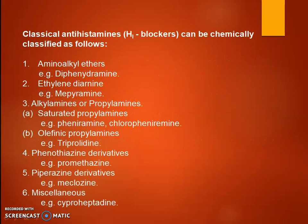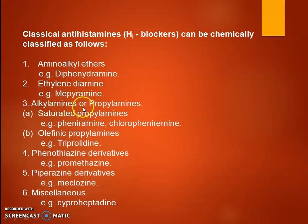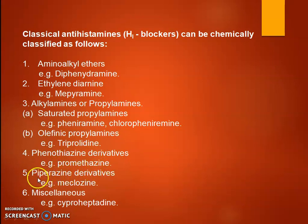Classification of antihistaminics: these are chemically classified into aminoalkyl ethers (e.g., diphenhydramine), ethylenediamines (e.g., mepyramine), alkylamines or propylamines — divided into saturated propylamine (e.g., pheniramine, chlorpheniramine) and olefinic propylamine (e.g., triprolidine) — phenothiazine derivatives (e.g., promethazine), piperazine derivatives (e.g., meclizine), and miscellaneous drugs (e.g., cyproheptadine).